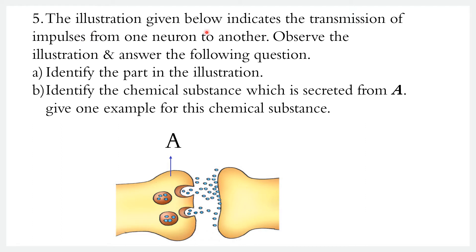Next question: the illustration given below indicates the transmission of impulses from one neuron to another. Observe the illustration and answer the following questions.